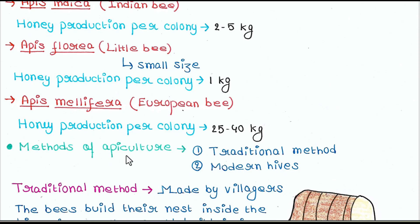Next we will talk about methods of Apiculture. So basically there are two methods: the first is the traditional method and the second is modern hives.